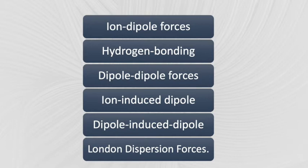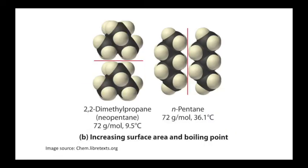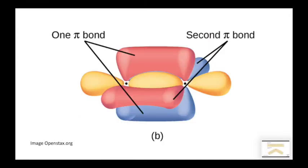Other types, like London dispersion forces, tend to be weaker. But in addition to the type of intermolecular attractions, factors like molecular size, contact area, shape, and presence or absence of pi bonding can also affect the strength of these attractions.